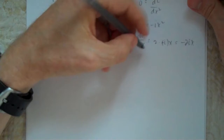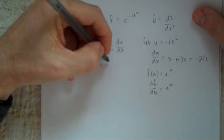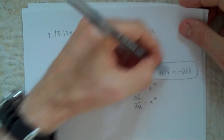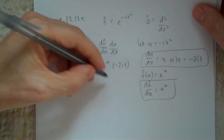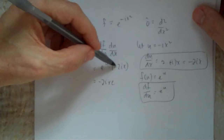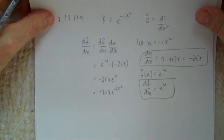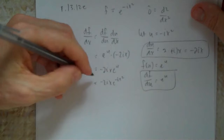Since u = minus ix², f(u) = e to the u. So df/du = e to the u. Therefore df/dx = (df/du)(du/dx) = e^u times minus 2ix = minus 2ix times e to the minus ix². That's the first derivative.